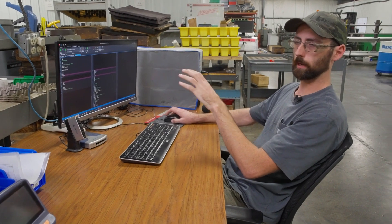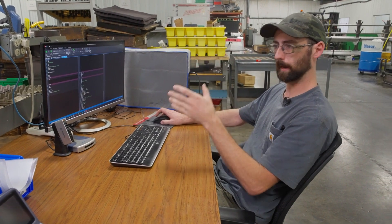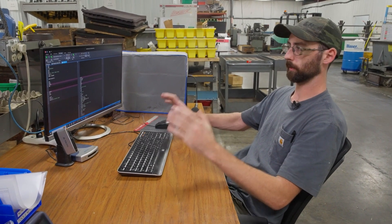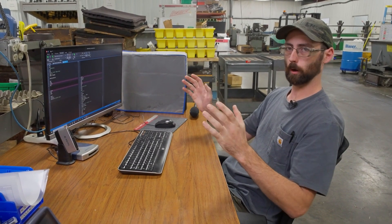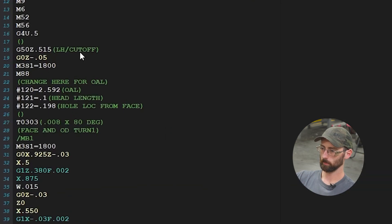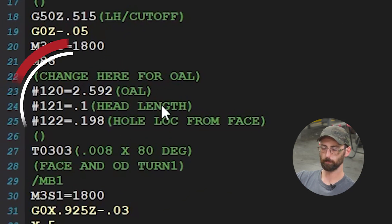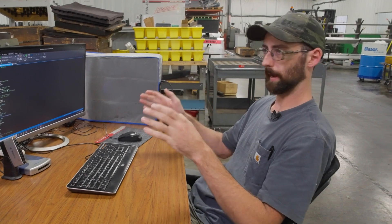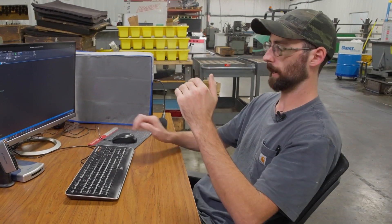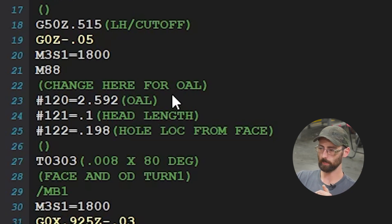Where you will see a lot of applications for variables is part families, which Swiss lathes are very good at running. You can use variables so you can have one program and change some variables, and you can run a different part number - your dash ones, twos, tens, all on the same program.